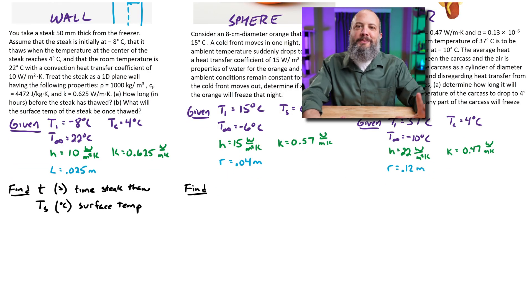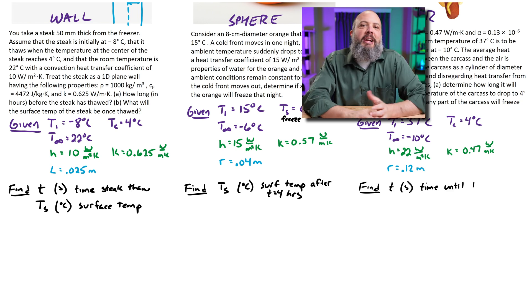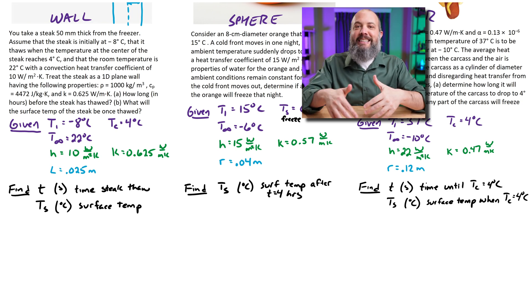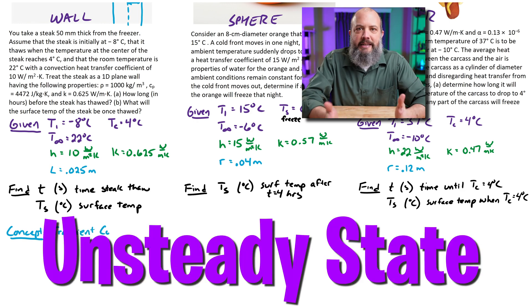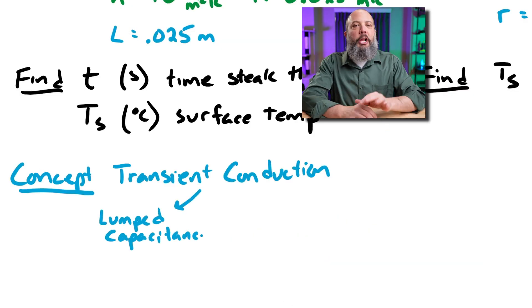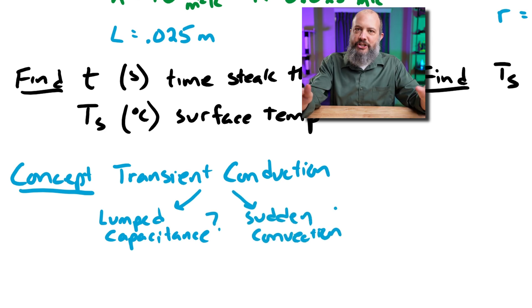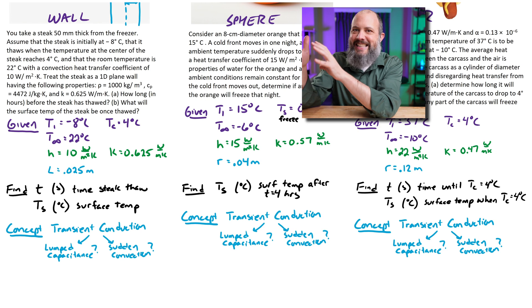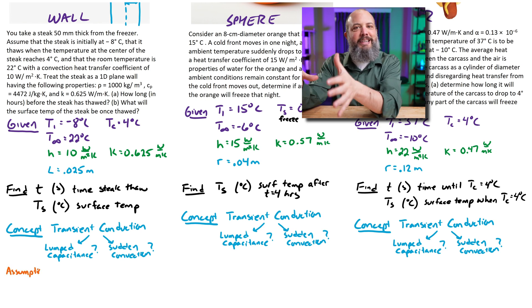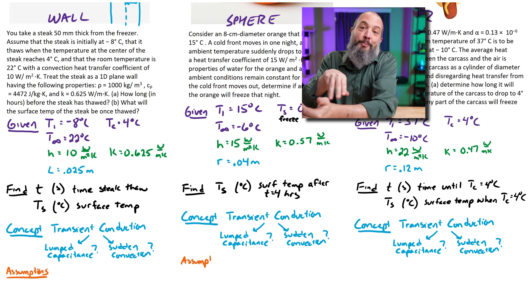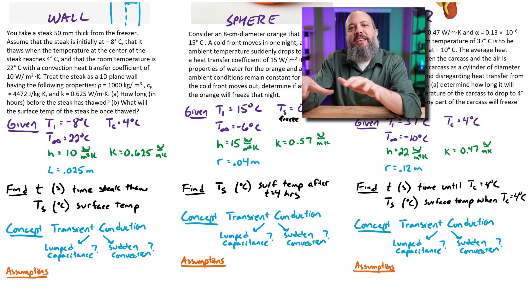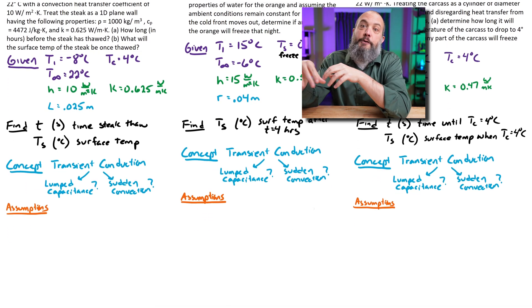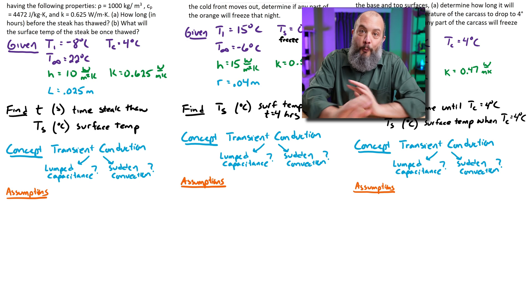What we're trying to find for each problem is surface temperature and time. The concept is transient conduction — conduction where we're not in steady state; temperature is changing, unsteady state conduction. That leaves an open question: lumped capacitance or sudden convection? Lumped capacitance is preferable — this is the easy version where the center and surface temperatures are assumed to be the same. For every transient conduction problem, you should always check the Biot number first to see if you can use lumped capacitance, because that makes the problem way easier.